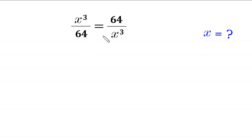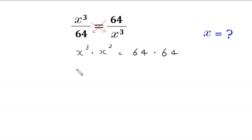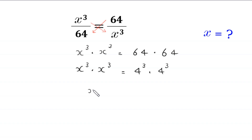First, we use cross multiplication. We multiply x cubed by x cubed, and 64 by 64. So this becomes x cubed times x cubed is equal to 64 times 64. Since 64 is the same as 4 cubed, we have x cubed times x cubed equals 4 cubed times 4 cubed.